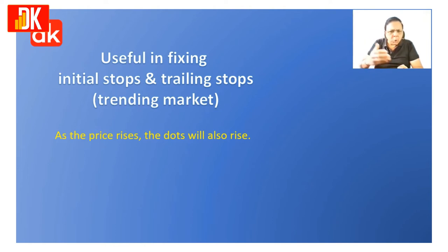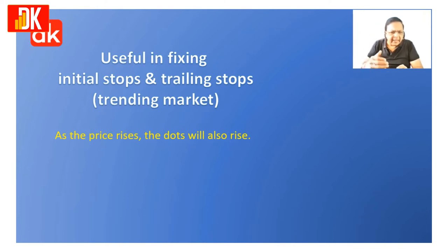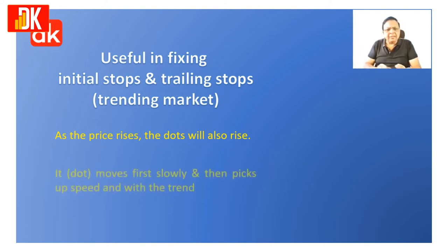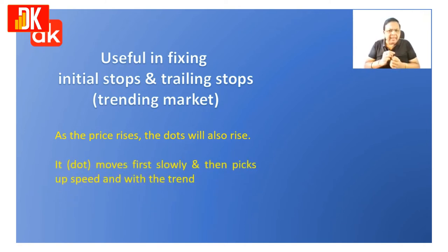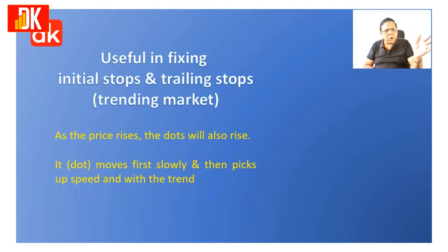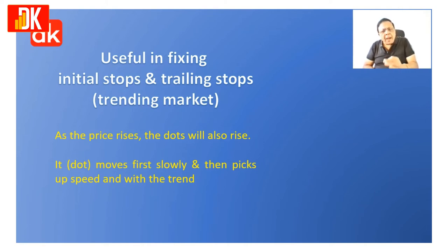As the price rises, the dots will also rise, helping to fix the trailing stop loss. When the dots start appearing in the opposite direction — that is, if they were appearing below the price candle and start appearing above the price candle — initially when the trend reversal occurs, the first dot appears below the price candle, which means up till now there was a downtrend prevailing, and the first dot is an indication of the probable commencement or resumption in the trend.